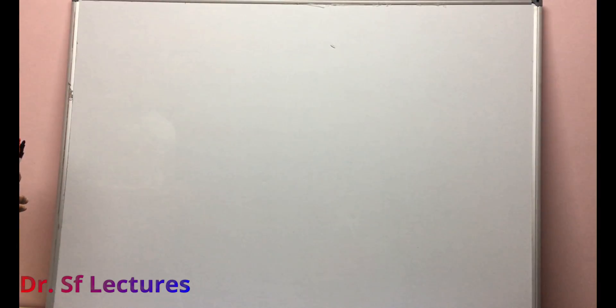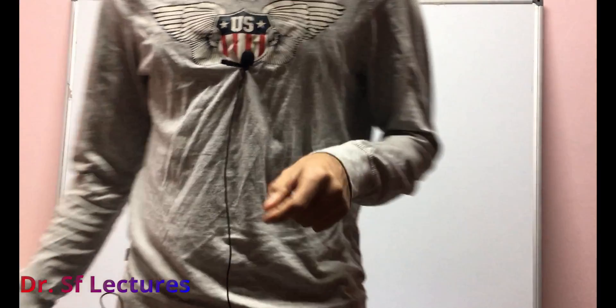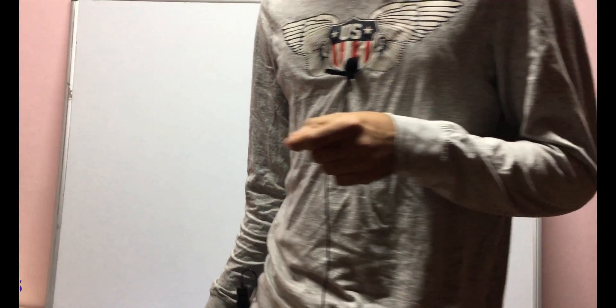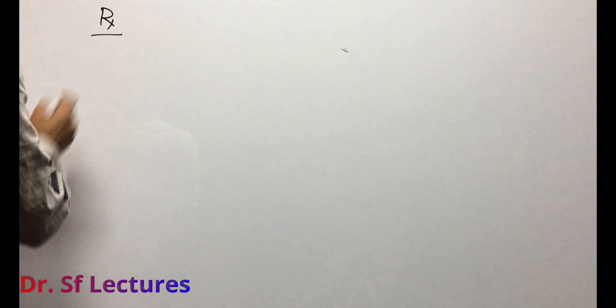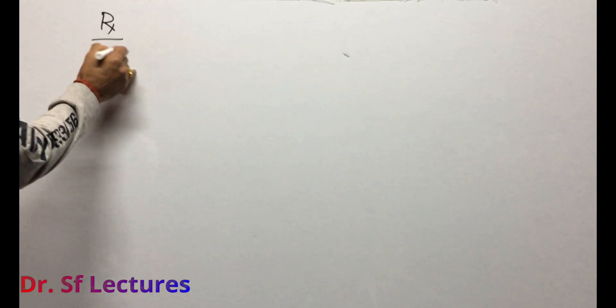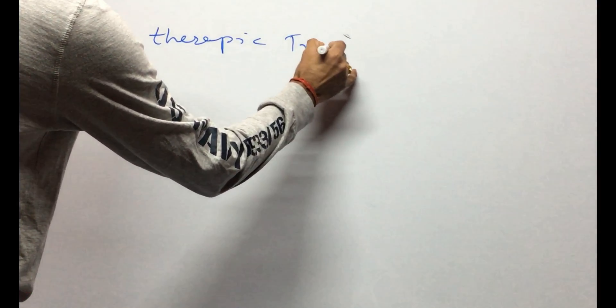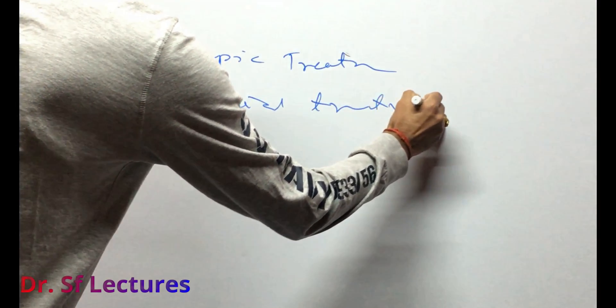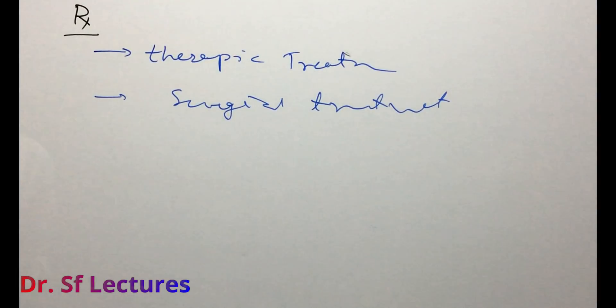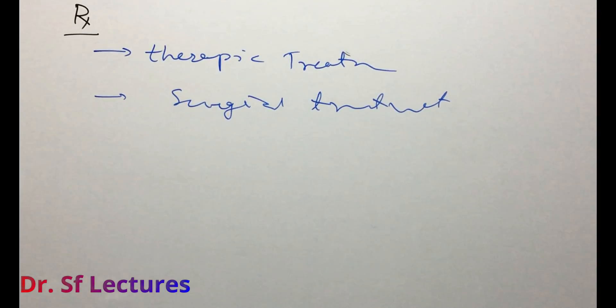We are going to talk about treatment of myocardial infarction and heart attack — the treatment for both is the same. There are two types of treatment: first is therapeutic treatment, and the second one is surgical treatment. In therapeutic treatment, we can use some agents.